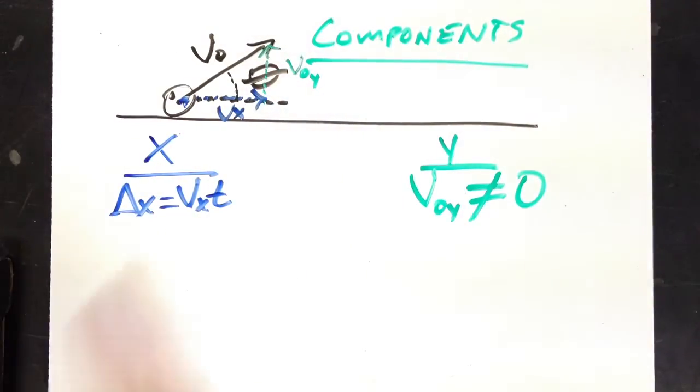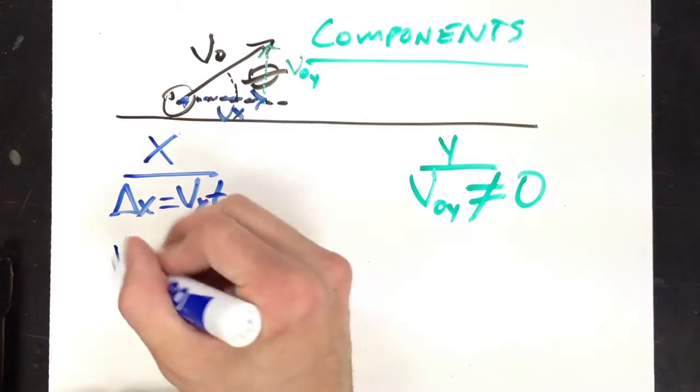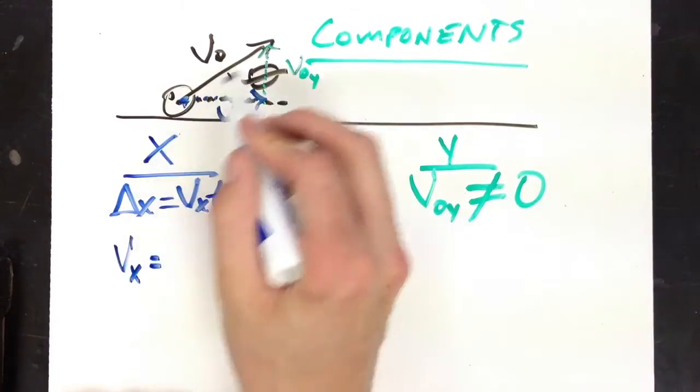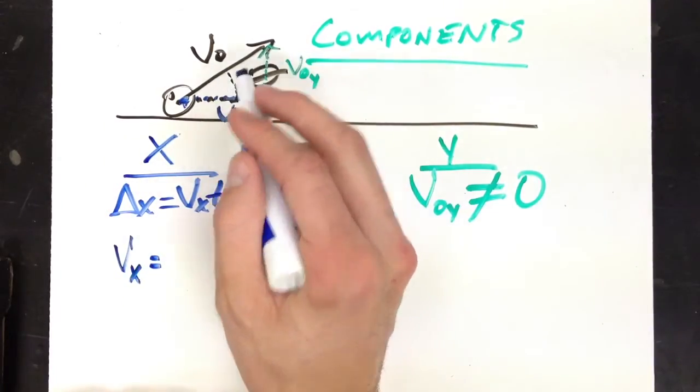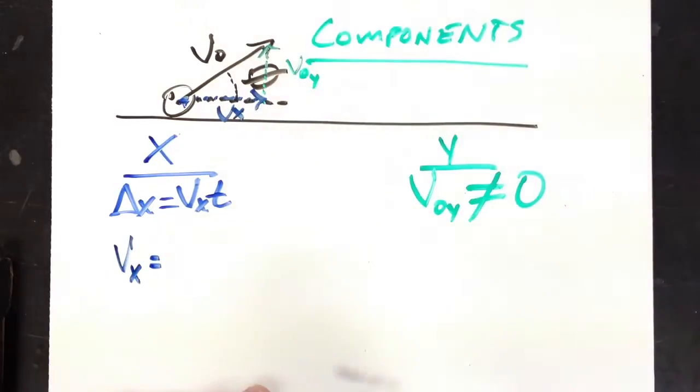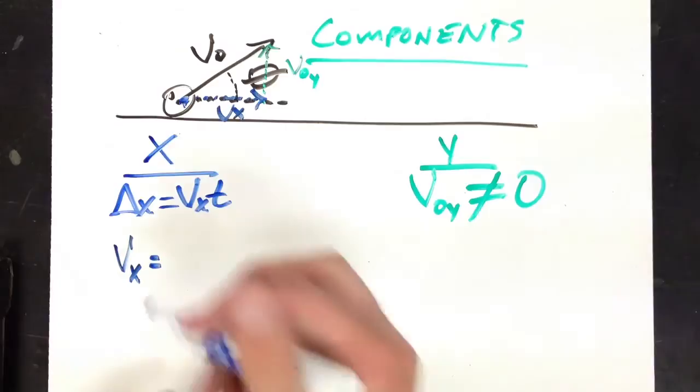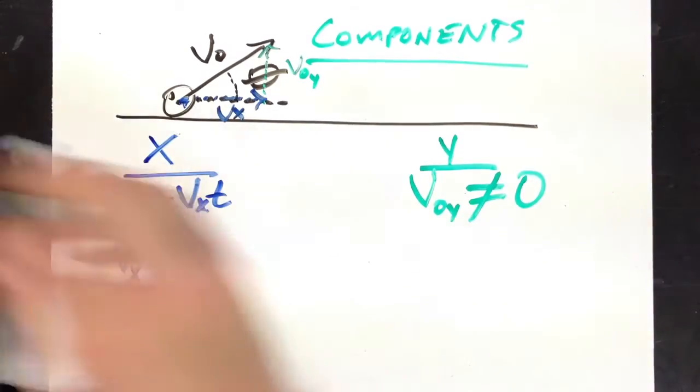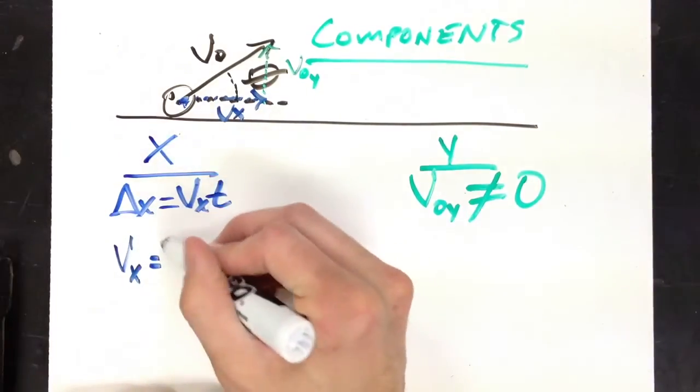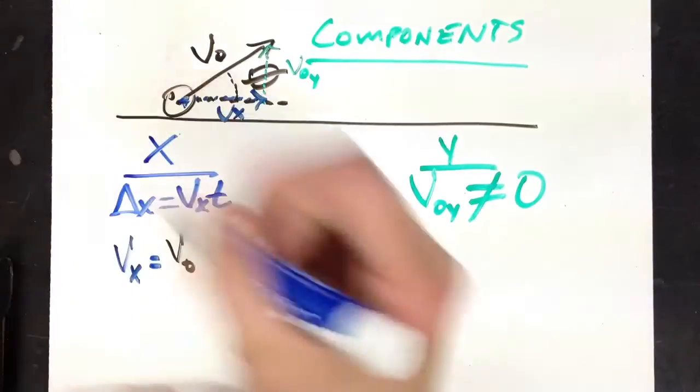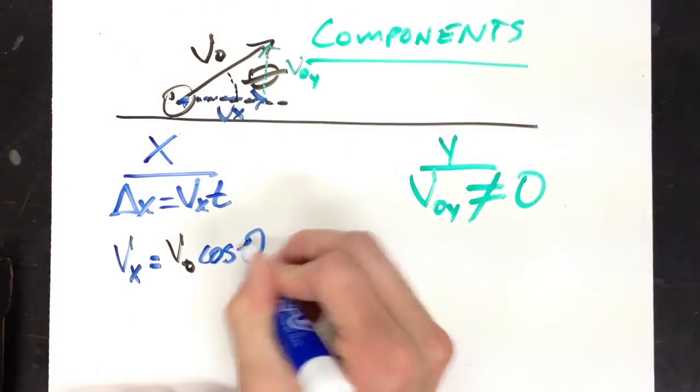Now, how do I get vx? Well, if you look at the triangle here, I know this angle. And let's say that I know v0. I know what speed it was fired from the cannon. Well, vx is going to be v0 cosine of theta.